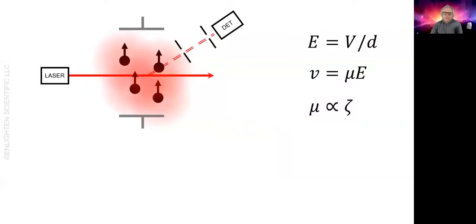Let's look at electrophoretic light scattering. If we shine a laser beam through a sample of particles, each particle will scatter the light and create a Doppler shift dependent on the velocity of that particle. It's like a police radar speed trap. And if you have millions of particles, then you have millions of Doppler shifts all contributing to the intensity of the scattered light.